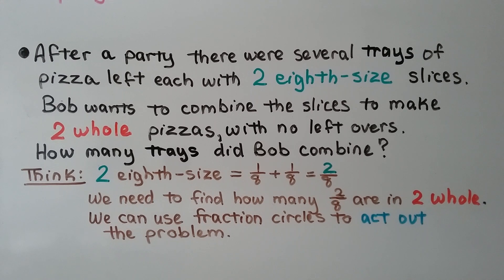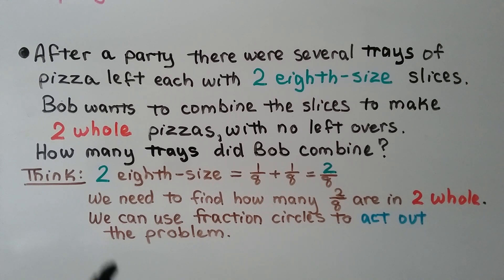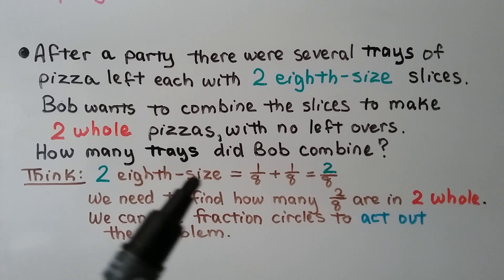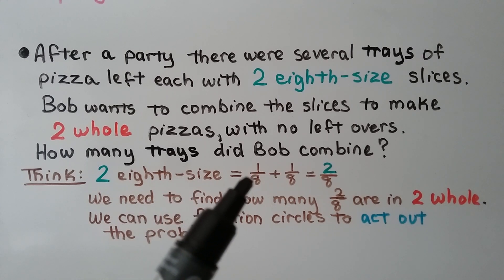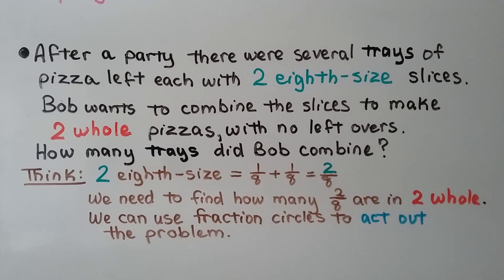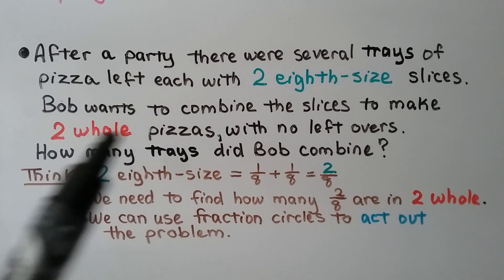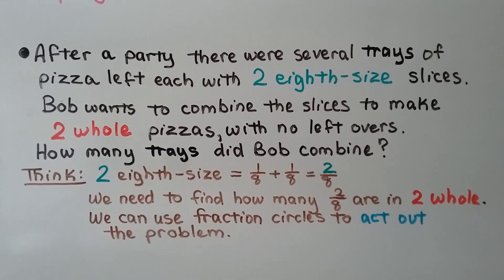After a party, there were several trays of pizza left, each with 2 one-eighth-size slices. Bob wants to combine the slices to make 2 whole pizzas with no leftovers. How many trays did Bob combine? We think: 2 one-eighth-size slices means 1/8 and 1/8, that's 2/8. We need to find how many groups of 2/8 are in 2 whole. We can use fraction circles to act out the problem.